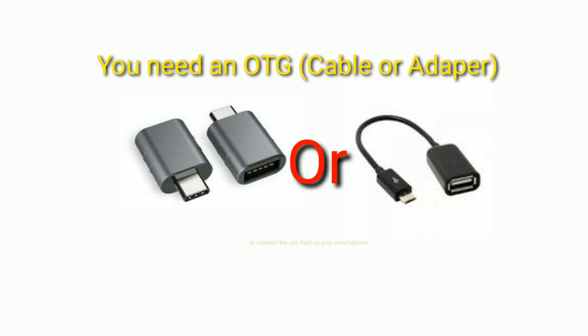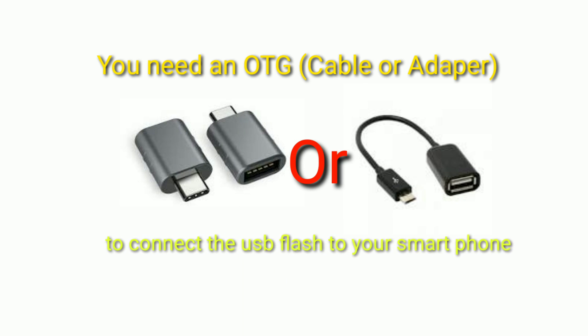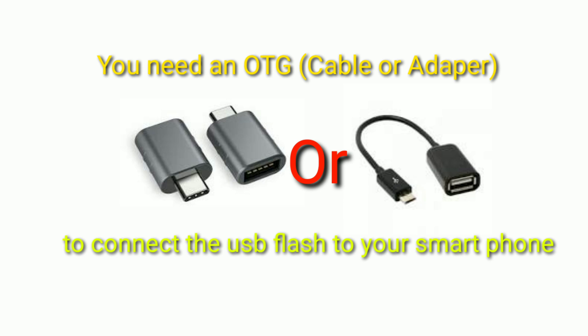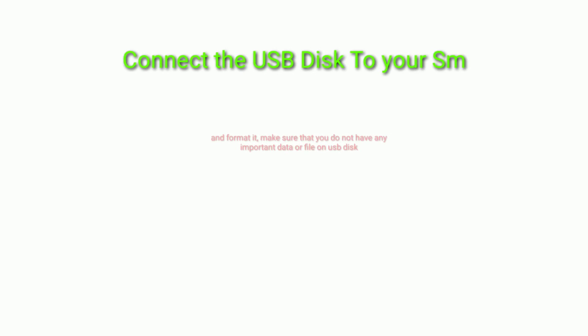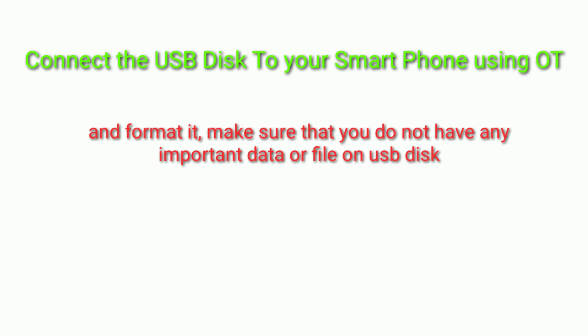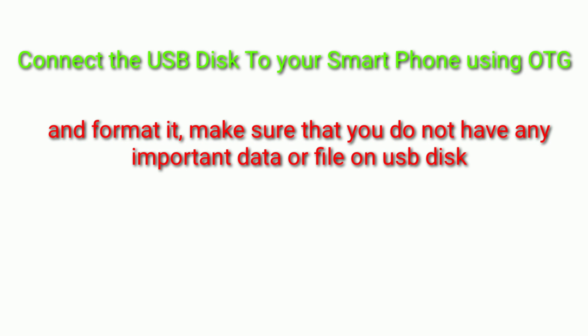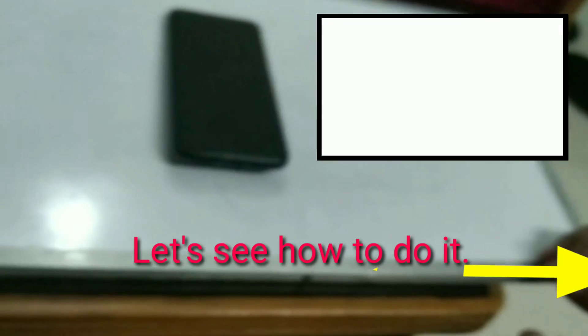For doing this task, we need an OTG cable or adapter to connect the USB flash drive to our smartphone. Connect the USB disk to your smartphone using OTG and format it. Make sure that you do not have any important data or file on the USB disk.